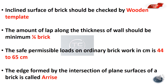The amount of overlap along the thickness of a wall should be a minimum of half a unit — that is, 1 by 2 of a brick. The safe permissible loads on ordinary brickwork in cement mortar is 44 to 65 kN/cm². The edge formed by the intersection of plain surfaces of brick is called arisers.